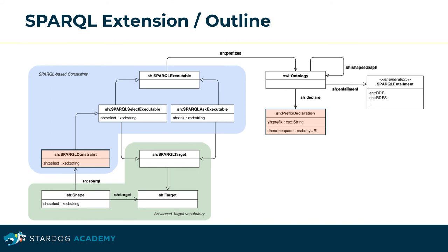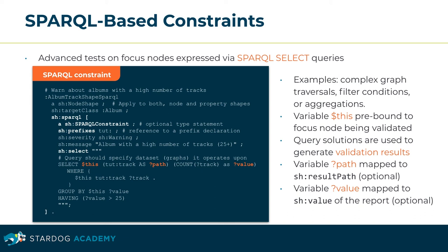SHACL features introduced so far are part of the core specification, which provides a high-level vocabulary for common validation use cases. The SHACL SPARQL extension provides a mechanism to define custom, more expressive constraints based on SPARQL SELECT queries. The PrefixDeclaration class supports a declaration of namespace prefixes for reuse within the embedded SPARQL queries. SPARQL-based constraints express advanced tests on focus nodes. They are implemented as SPARQL SELECT queries involving, for example, complex graph patterns, filter conditions, or aggregations.